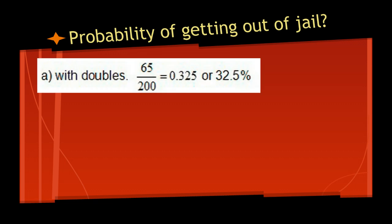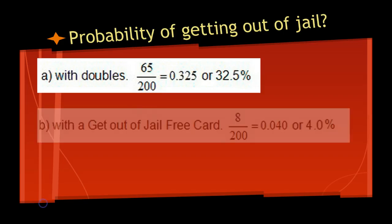If he throws doubles — that's two numbers the same on two dice — that happens 65 times in 200. 65 over 200 is 32.5%. So that means roughly a third of the time he gets out of jail with doubles.